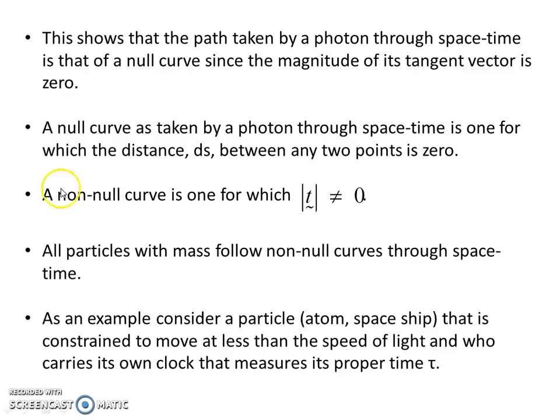Against that, a non-null curve now is one for which the modulus of t is not equal to 0. And all particles with mass follow non-null curves through spacetime. So if you consider an example of an atom or a spaceship or any other object moving through spacetime, that's constrained to move at less than the speed of light. And if we imagine one that carries its own clock, so it measures its own proper time τ. Let's have a look at what that says.